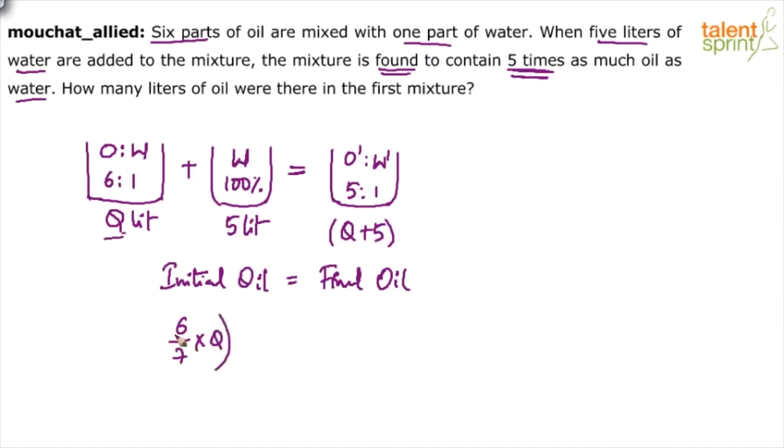into Q plus 5. That's it. Solve for this and you get the value of Q. You getting it? (6/7)Q plus 0 equals (5/6) times (Q plus 5). Total quantity is Q plus 5.